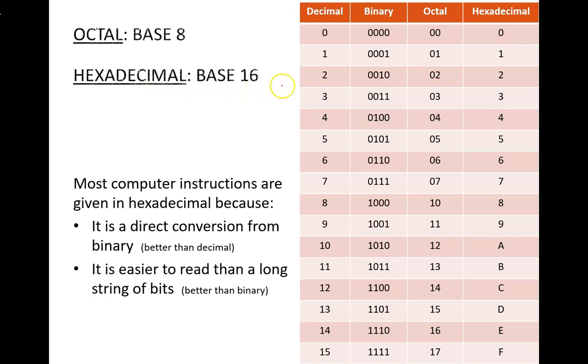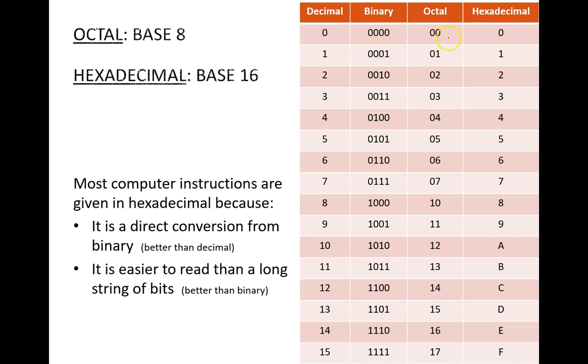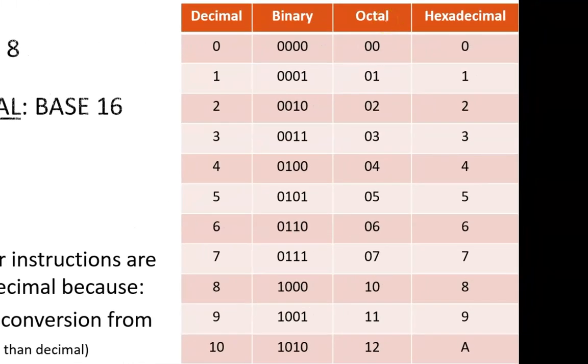This chart shows how we can count from decimal 0 to 15 in all of the major bases, including binary, octal, and hexadecimal. The binary column we have seen before, so let's start on the octal column. In base 8, the largest possible digit is 7, so you can see that for the numbers 0 through 7, the octal count matches the decimal count.